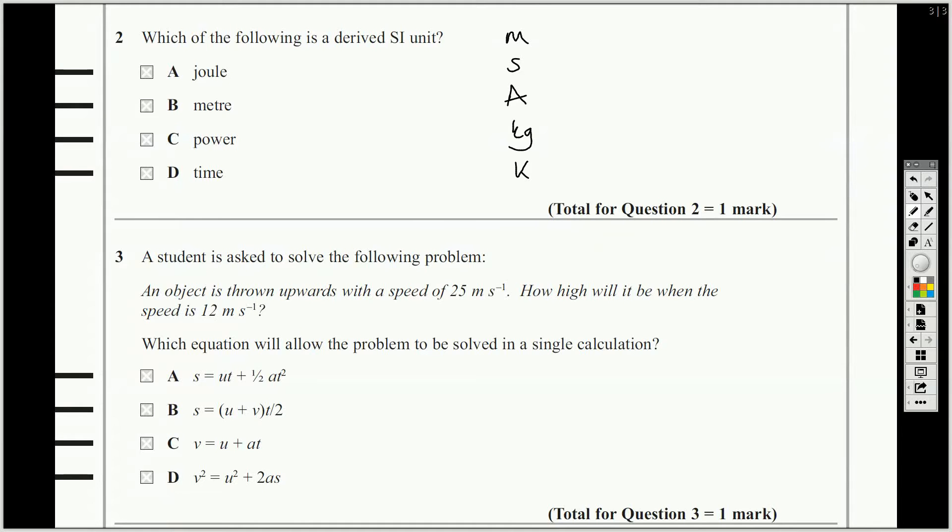So, which of the following is a derived unit, which doesn't come in here. Well, metres is in there, time is not a unit, power is not a unit. So, which is the derived unit is that one.